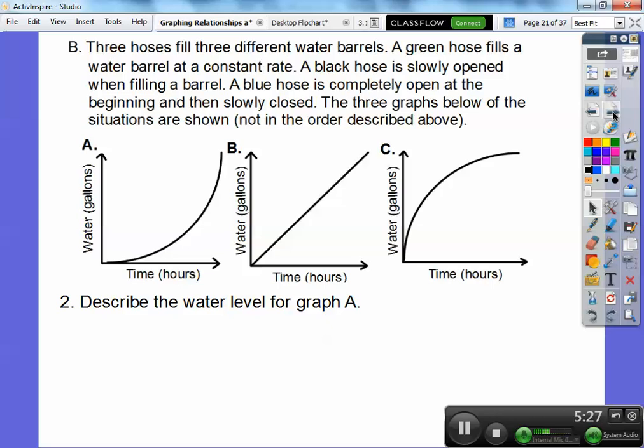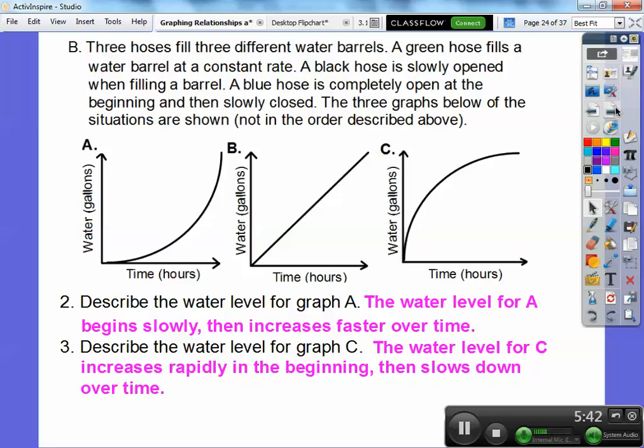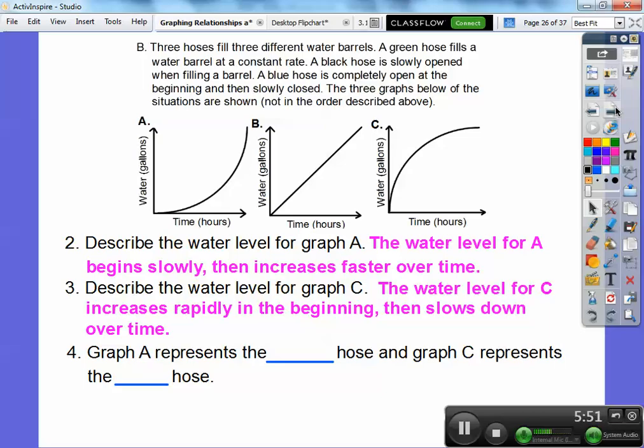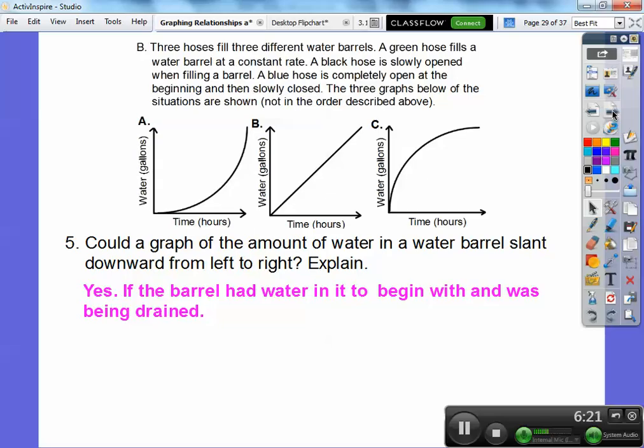So describe the water level for graph A. So what I said is right here, the water level for A begins slowly and then increases really fast towards the end right here. How about C? Well, this one started really fast and then it started shutting off towards the end. So the water level for C increased rapidly in the beginning and then slowed down over time. Just moving it up again. So graph A represents which hose? Well, graph A represents the black hose, the one that started opening slowly and then it opened up faster towards the end. And then graph C represented the one, the blue hose that was opened up all the way at the beginning and started slowly closing right there. So could a graph of the amount of water in the water barrel be slanted downwards from left to right? Yeah. If the barrel was full of water in the beginning and then it started to begin to be drained. So if you opened up a hole at the bottom and it started going down, it would start sloping down.